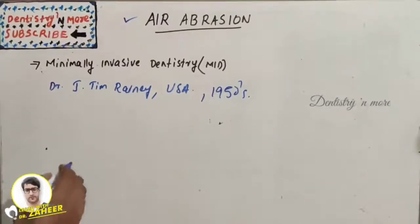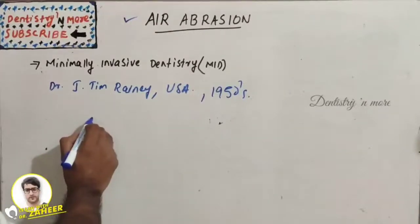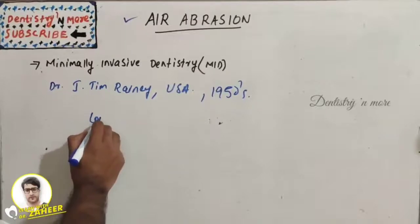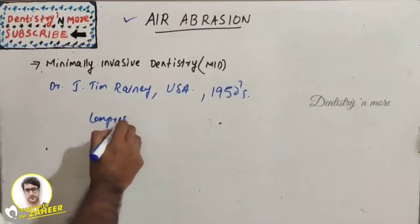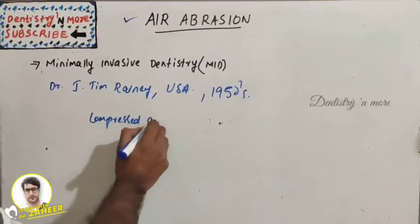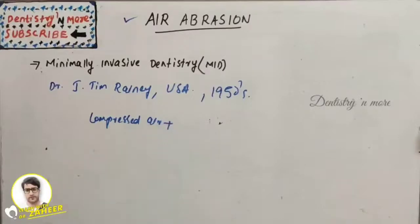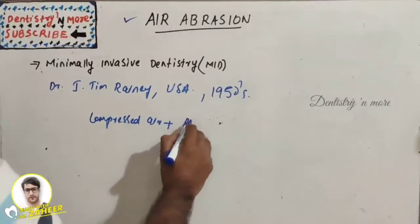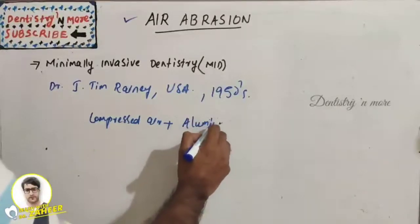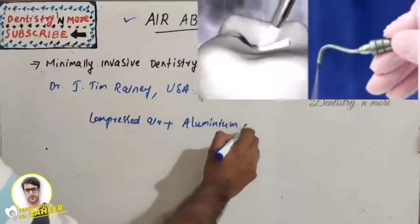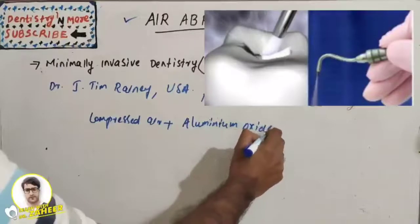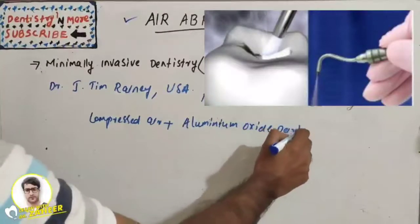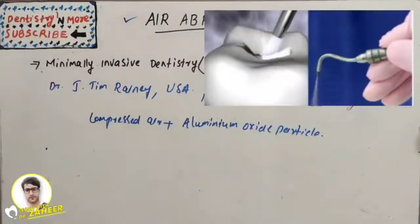Air abrasion uses two components: compressed air that propels aluminum oxide particles. These aluminum oxide particles will be projected to the cavity where we need a preparation through compressed air and does the job.